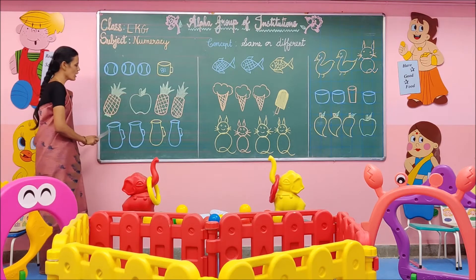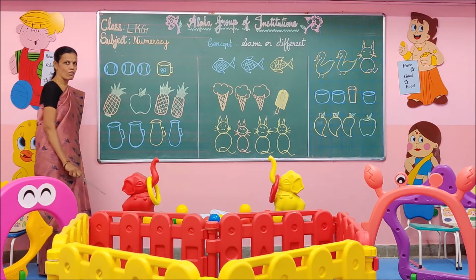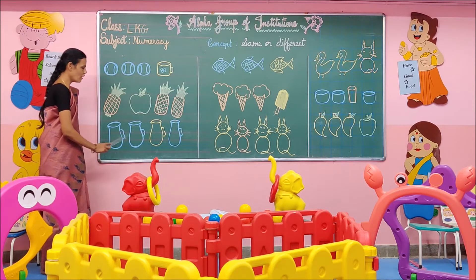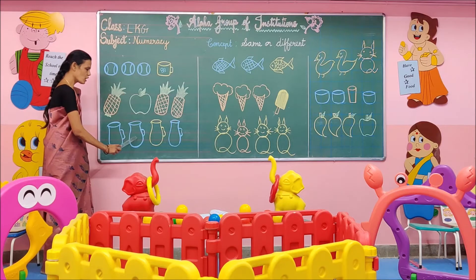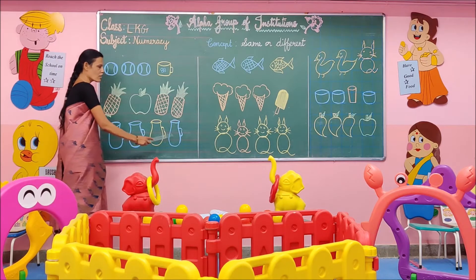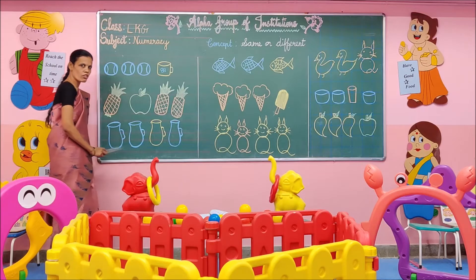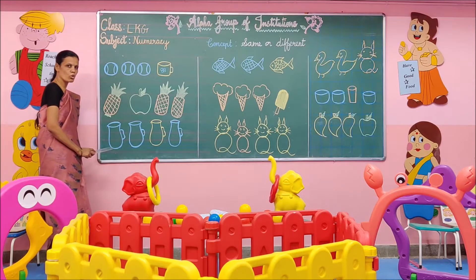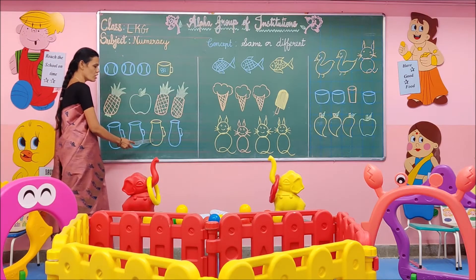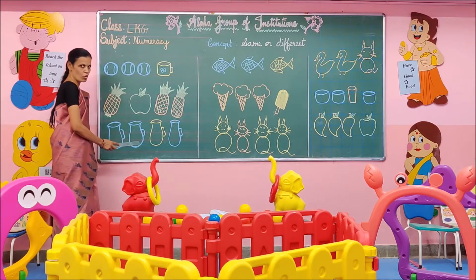Next, here we are having jugs. This is blue in colour. This is yellow in colour. This is also blue in colour. Which one is different in this group? Yellow is different in this group. Yellow does not belong to this group.